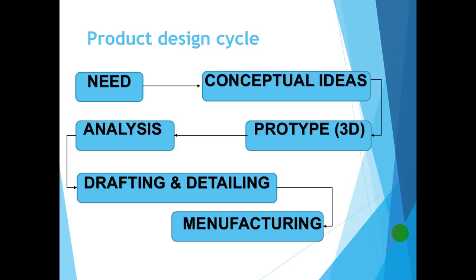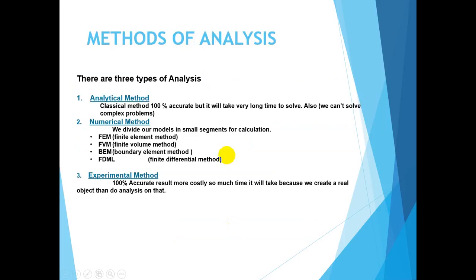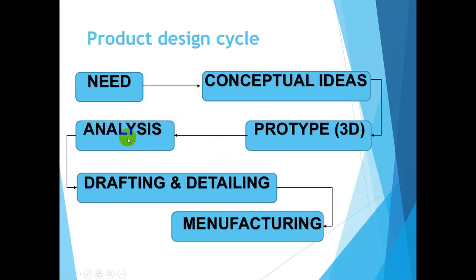When we are going to design a product, what is the product design cycle? First, there is a need or customer satisfaction need. Due to this need, engineers have conceptual ideas. Then the engineers prototype the conceptual ideas and do analysis on it — this is the stage when ANSYS is used. After analysis there is drafting and detailing, then a manufacturing stage.